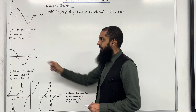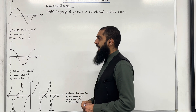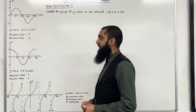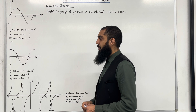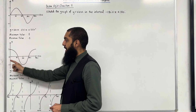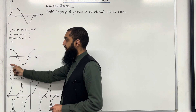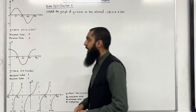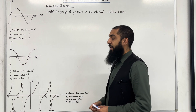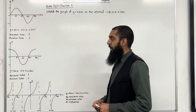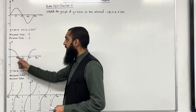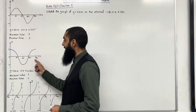Over here I've drawn the graph of y equals cos x for x between 0 degrees and 360 degrees inclusive. The maximum value of the graph is 1 and the minimum value is minus 1. The graph of y equals cos x is also symmetrical and it is periodic — it repeats itself every 360 degrees.